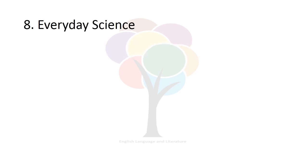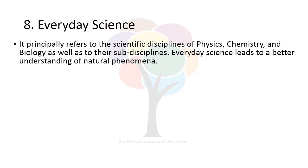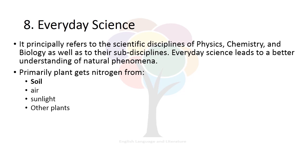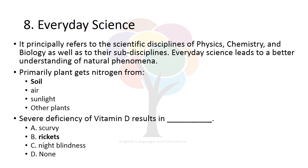The eighth module is Everyday Science, which principally refers to the scientific disciplines of physics, chemistry, and biology as well as their sub-disciplines. Everyday science leads to a better understanding of natural phenomena. In the paper you may be asked: 'Primarily, a plant gets nitrogen from — soil, air, sunlight, or other plants?' The right option is soil. You may also be asked: 'Severe deficiency of Vitamin D results in — scurvy, rickets, night blindness, or none?' The right option is B, rickets. Severe deficiency of Vitamin D results in rickets.